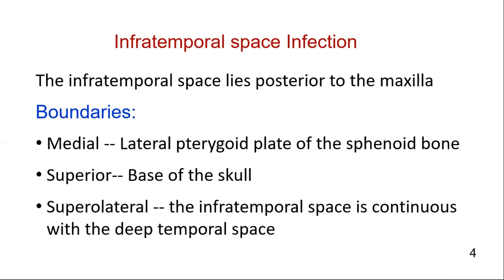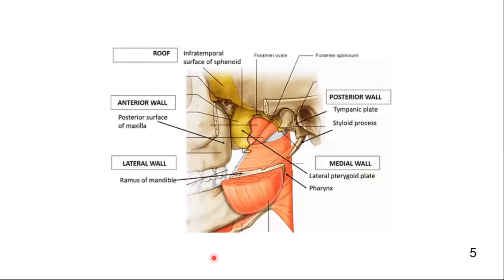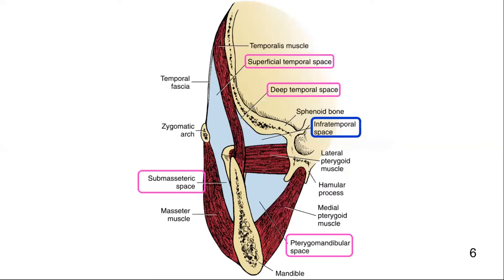As far as the boundaries are concerned, the infratemporal space is bordered medially by the lateral pterygoid plate of the sphenoid bone, and superiorly by the base of the skull — that is, the infratemporal surface of the sphenoid bone — and is continuous laterally and superiorly with the deep temporal space.